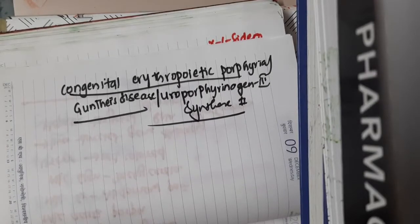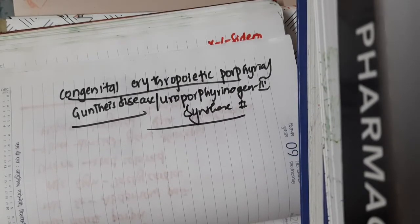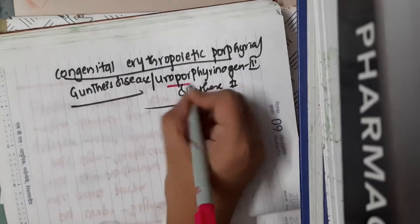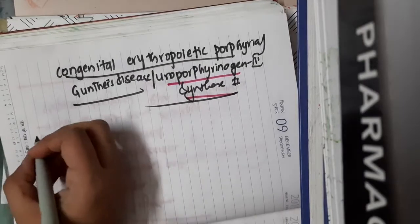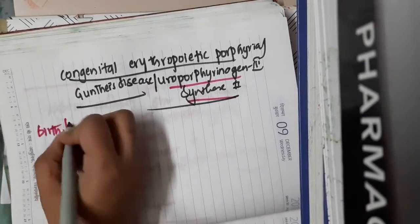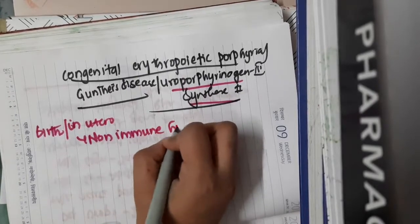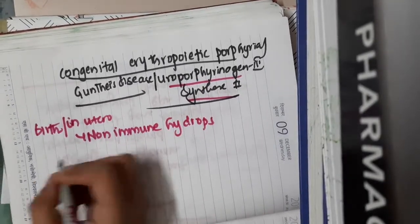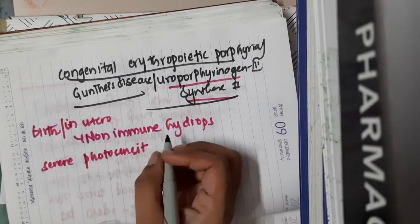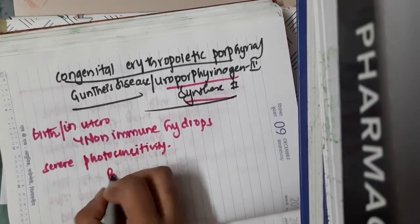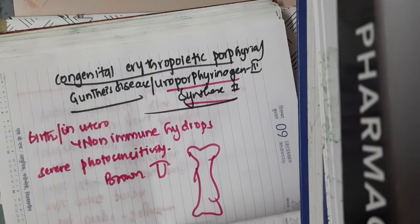Hello friends, let us now learn some important points about congenital erythropoietic porphyria, also known as Gunther's disease or uroporphyrinogen-3 synthase defect. As the disease name says, it occurs due to the defect in uroporphyrinogen-3 synthase. The child presents at birth or in utero with non-immune hydrops. The patient has severe photosensitivity and there is porphyrin deposition causing brownish discoloration of teeth and bone in congenital erythropoietic porphyria.